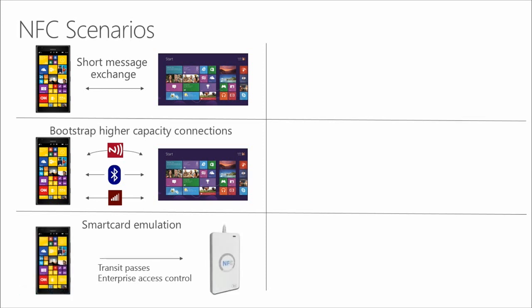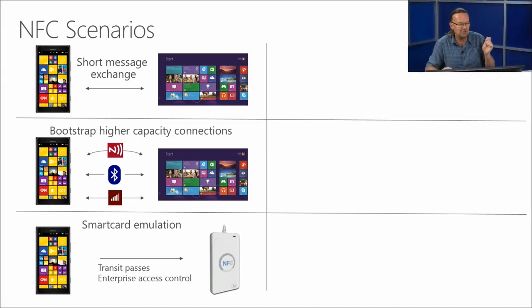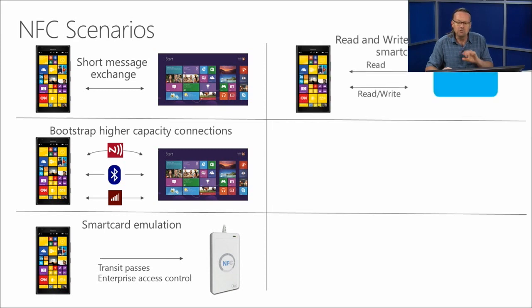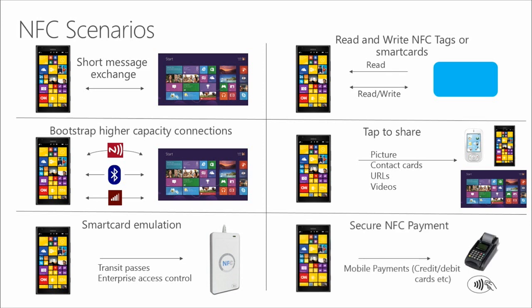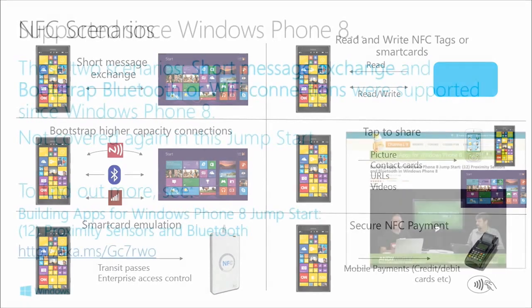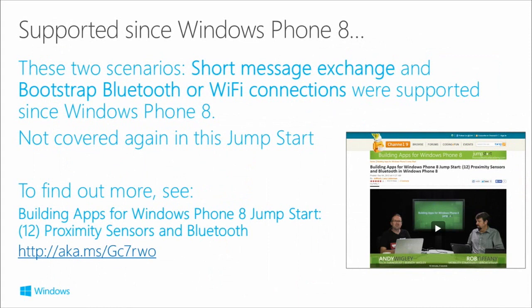You can emulate smart cards, use it for transit passes, or getting through smart gates as like a smart card. You can read and write to NFC tags or smart cards. You can tap to share - that's all built into the sharing functionality to share pictures, contact cards, URLs, and videos. And it's also available for secure NFC payment, though that's a bit of a specialist field. We've been able to do short message exchange and tapping to initiate higher-bandwidth connections since Windows Phone 8, and in the previous Jumpstart proximity and Bluetooth session you can find out more about those.